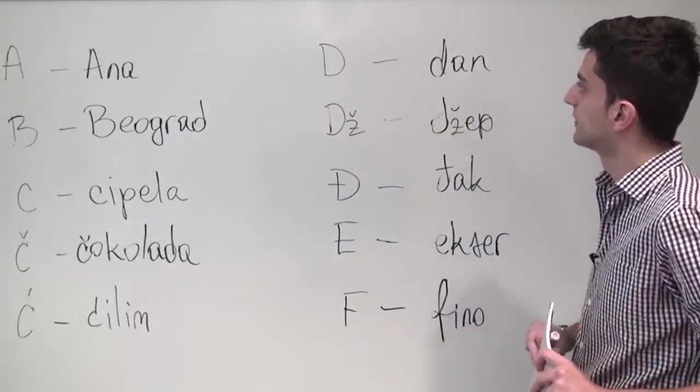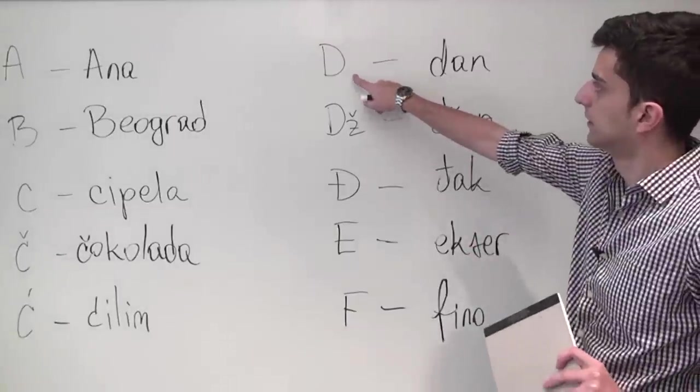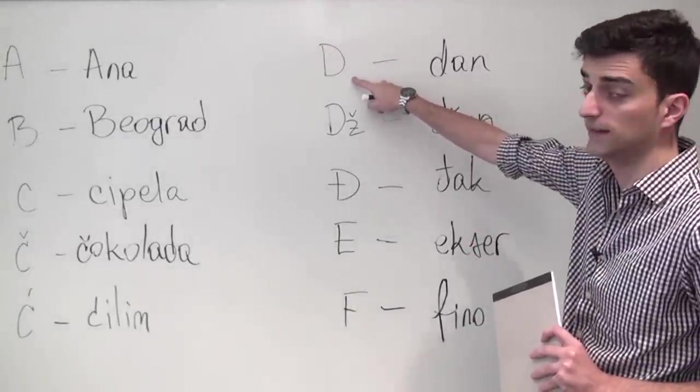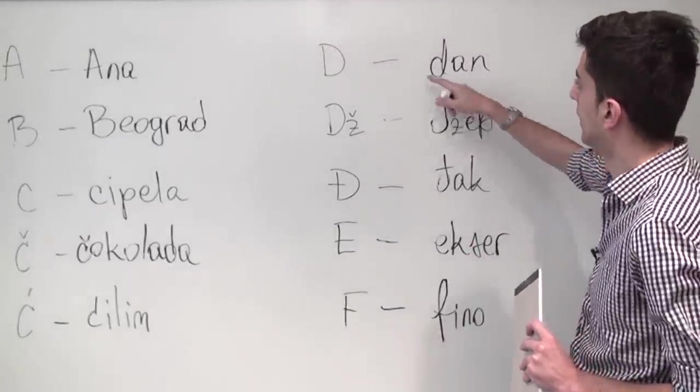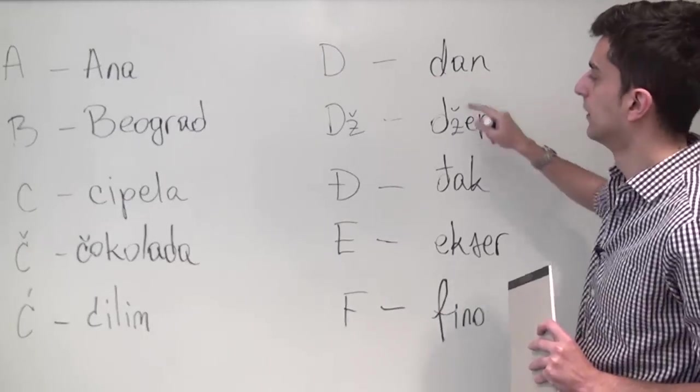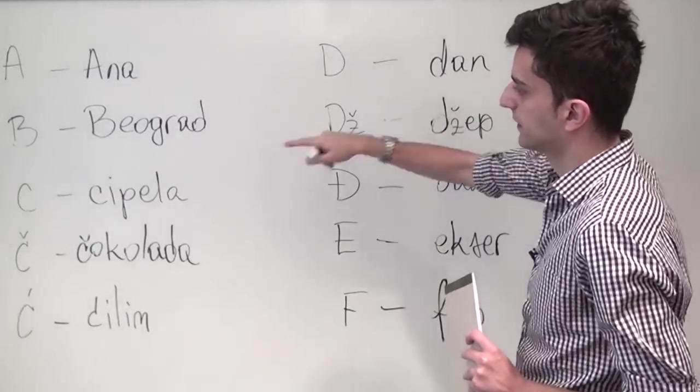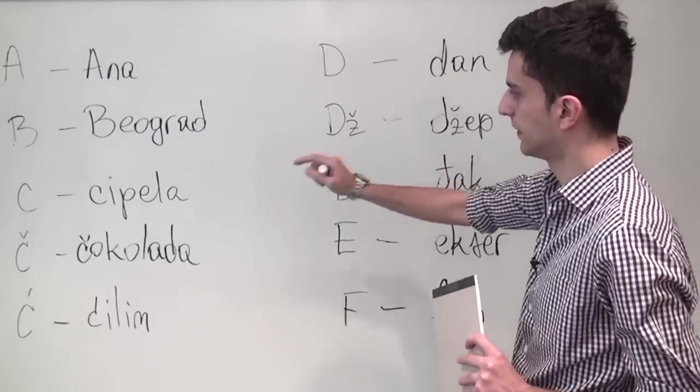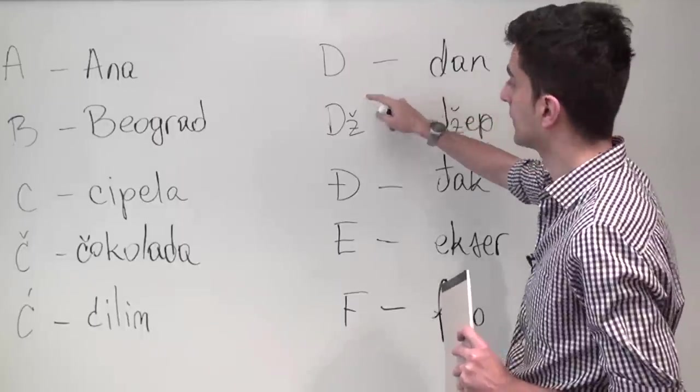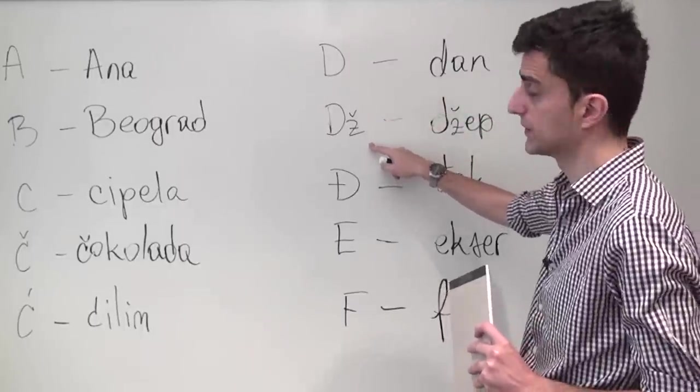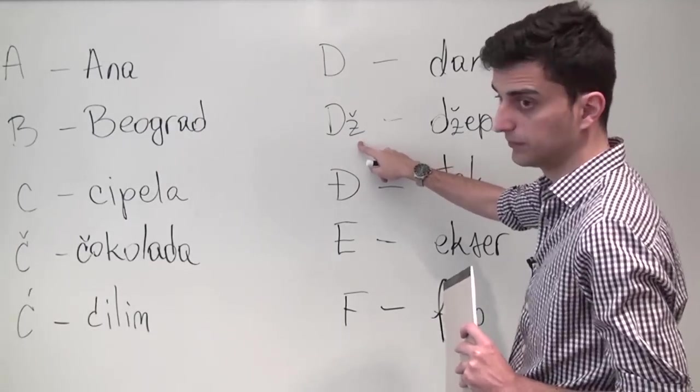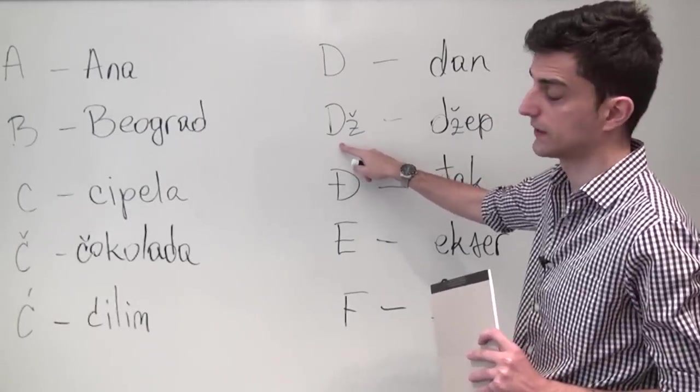Now moving on to the next five letters, there's the letter D which in BCS is pronounced as D and it can be heard in BCS word dan. Now just like C has two other letters that are associated with it, so does D. One of them is Dž, which is the first digraph. It's a combination of the letter D and the letter Ž, but like I said it's one sound, Dž.